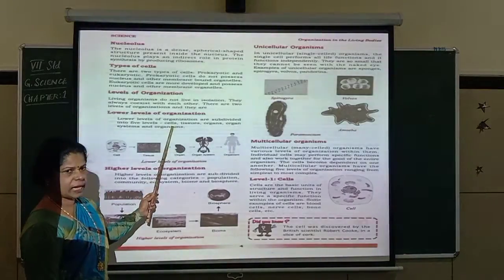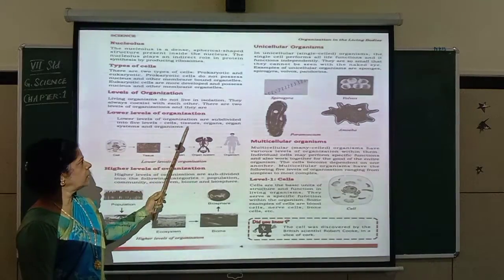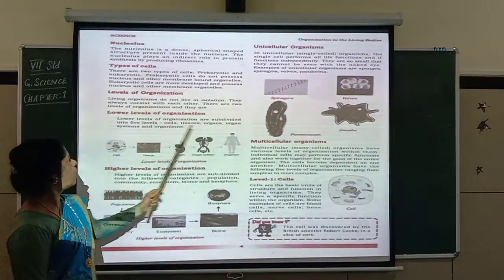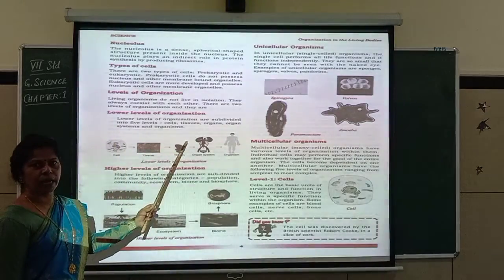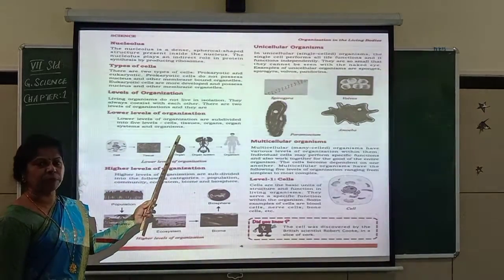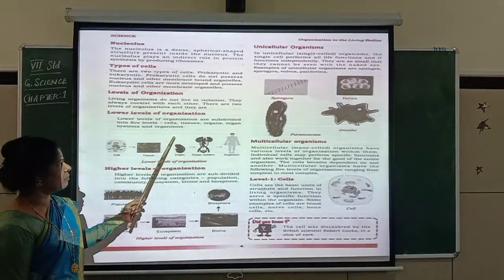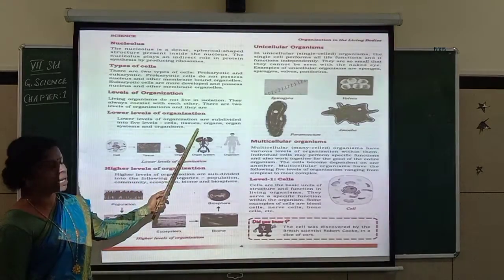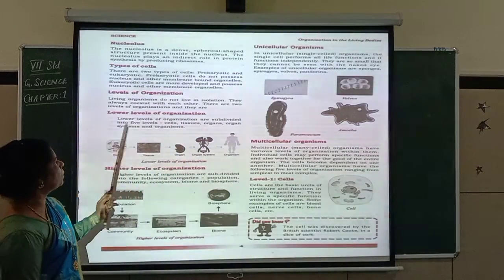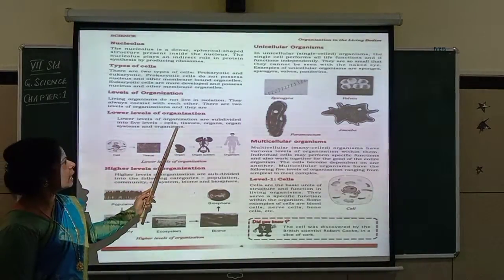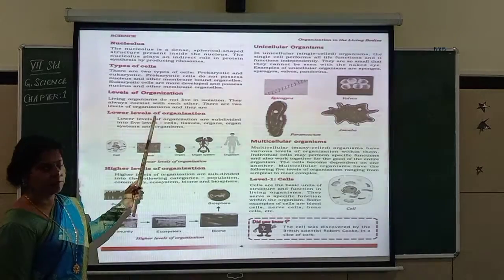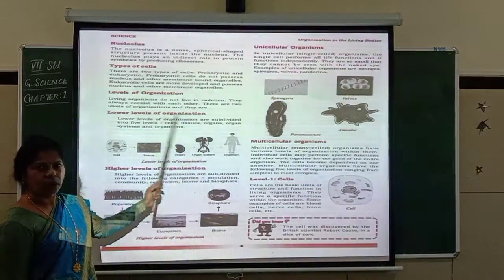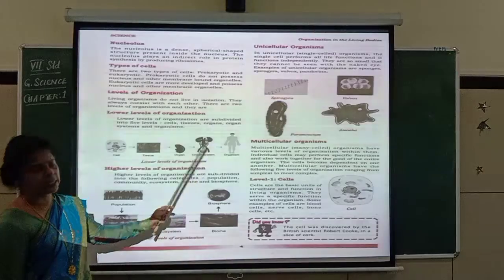The five subdivisions of the lower level are: cells, tissues, organs, organ system, and organism. You have already learned this in a previous class. So the lower levels of organization are subdivided into five levels: cell level, tissue level, organ level, organ system level, and organism.